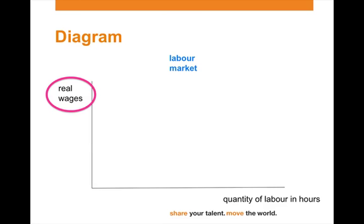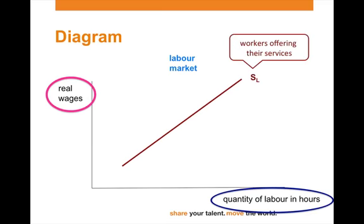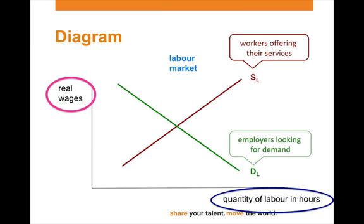The term real in economics refers to corrected for inflation. For both workers and employers, real wages are most relevant. For workers it's not so much the nominal wages — in other words, what you get transferred — that is relevant, but what you can purchase with that income. Please notice on the horizontal axis we have quantity of labor in hours — we'll talk about that in a second. The supply curve labeled S_L represents workers offering their services, and the demand curve represents employers looking for workers.